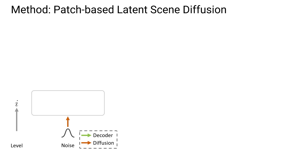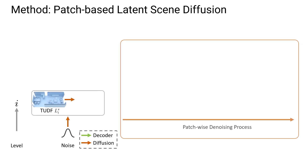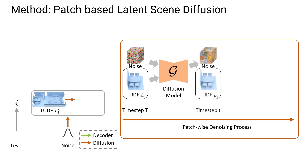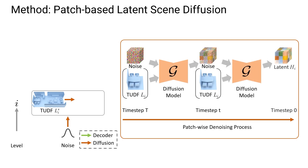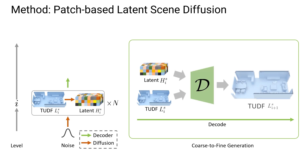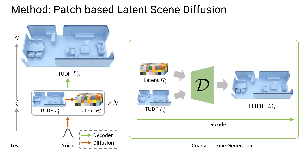We then train a diffusion model on each level of the latent tree in a patchwise fashion. Starting from the coarsest resolution, we unconditionally generate patches autoregressively. We then refine the output prediction in a coarse-to-fine hierarchy conditioned on the coarser resolution outputs. At each resolution level, we decode generated latent volumes from a diffusion model to produce 3D scene geometry as unsigned distance field volumes, to be taken as input for the next higher resolution level.